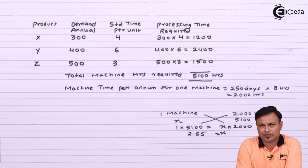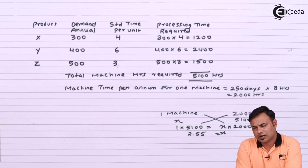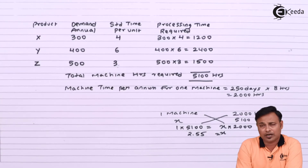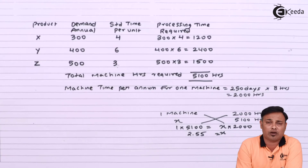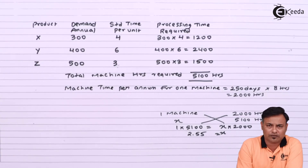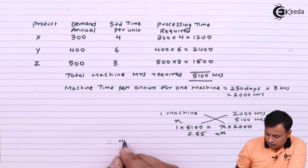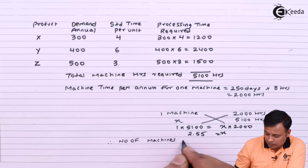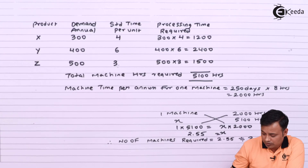You can't buy machines in fractions — machines are not something you can buy in parts. If the result is 2.55, we must buy 3 machines. Even if it comes to 2.01, we still buy 3 machines. Any fractional part of a machine is always rounded up to the next whole number. In case of rounding off machines, human beings, or any such discrete quantity, rounding should always be to the next highest number. Therefore, the number of machines required is 2.55, approximately 3 machines.